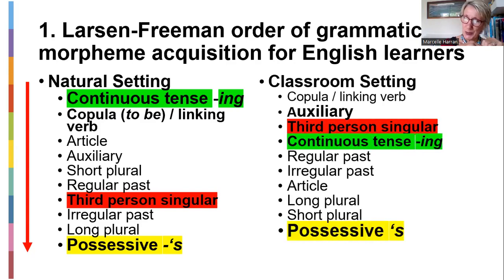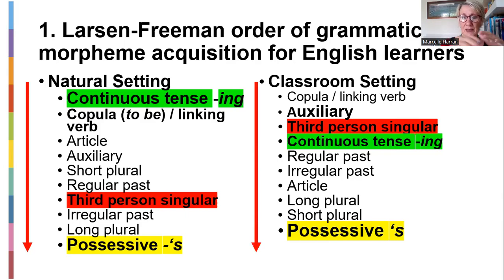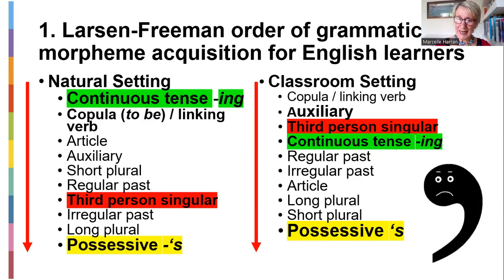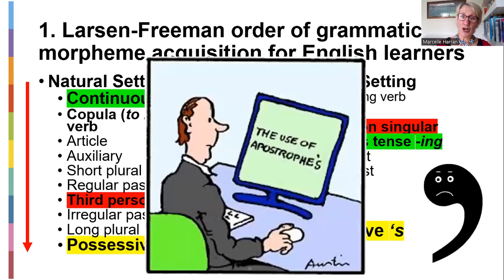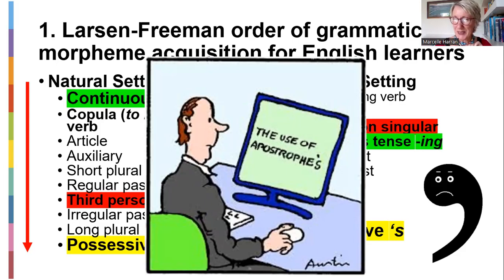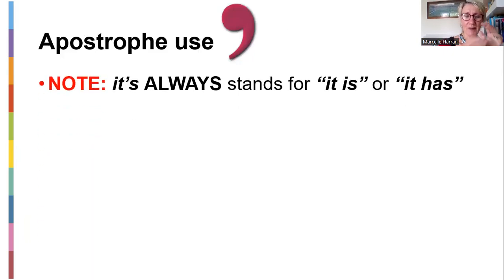In the classroom setting, people seem to acquire the third person singular more easily when they've been taught it, then the continuous tense, and the possessive remains the most difficult even at school. Even adults battle with the possessive, so we need to understand how it works. Looking at this cartoon — is the apostrophe use correct? If it's plural, would you put an apostrophe before the S?